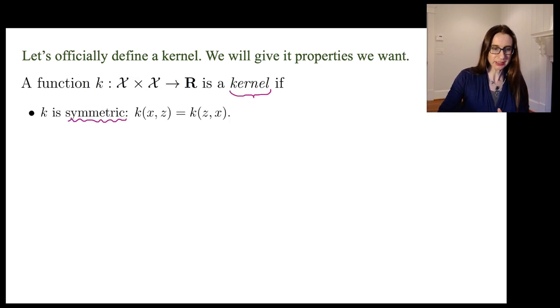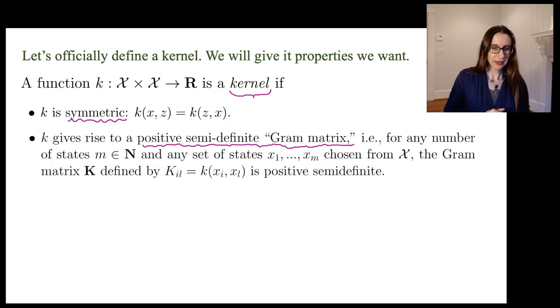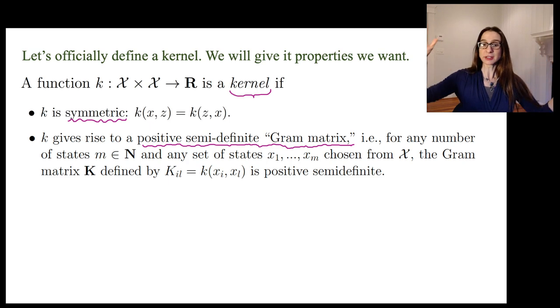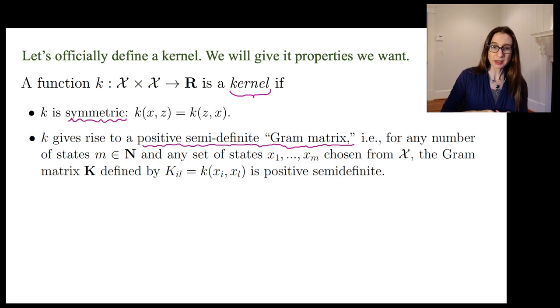A function k from X × X → R is a kernel if k is symmetric, k(x,z) = k(z,x), and k gives rise to a positive semi-definite Gram matrix. That is, for any number of states m ∈ N and any set of states x₁, ..., xₘ chosen from X, the Gram matrix K defined by Kᵢⱼ = k(xᵢ, xⱼ) is positive semidefinite. So you grab a finite number of points from the feature space, form a gram matrix from those, and that gram matrix must be positive semi-definite, no matter how many points you choose, no matter where in the feature space those points are.